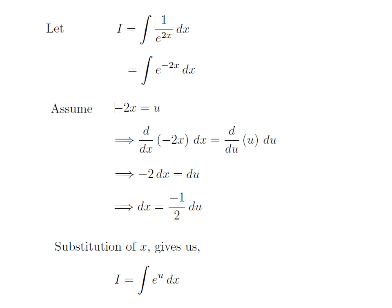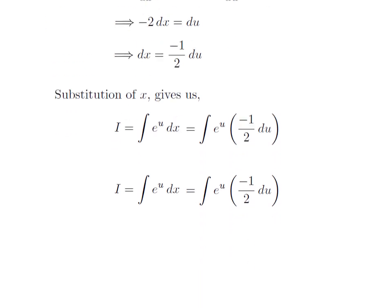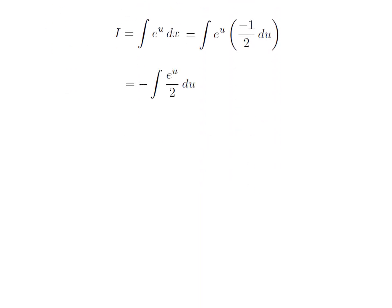Here I substituted x in integral i by our assumed value. The integration i has become the integration of e to the power u into dx. Now, substituting dx by minus 1 upon 2 into du, we get i is equal to the integration of e to the power u into minus 1 upon 2 into du. Multiplying minus 1 upon 2 with e to the power u, we get i equals minus the integration of e to the power u divided by 2 with respect to u.